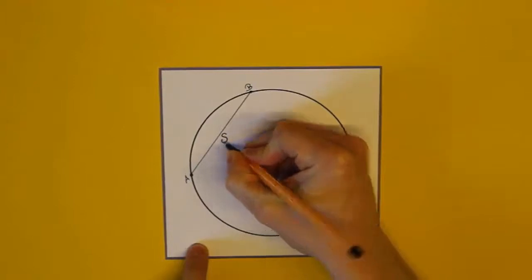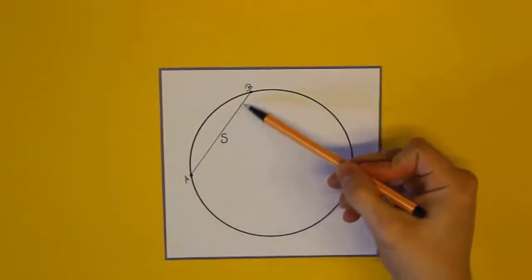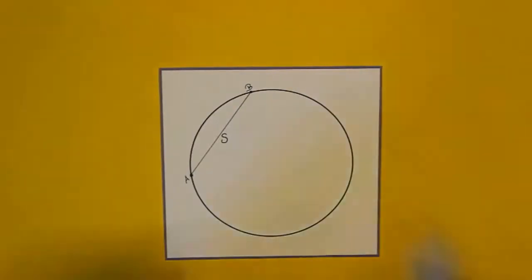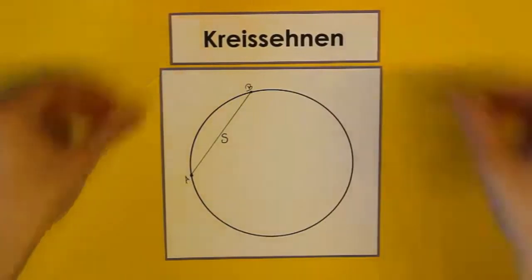Beschriften wir jetzt auch diese Strecke, weil man das auch immer macht, damit man sich darauf beziehen kann, und beschriften sie mit einem kleinen S. Und so eine besondere Strecke S, wie wir sie hier haben, nennt man eine Kreissehne.